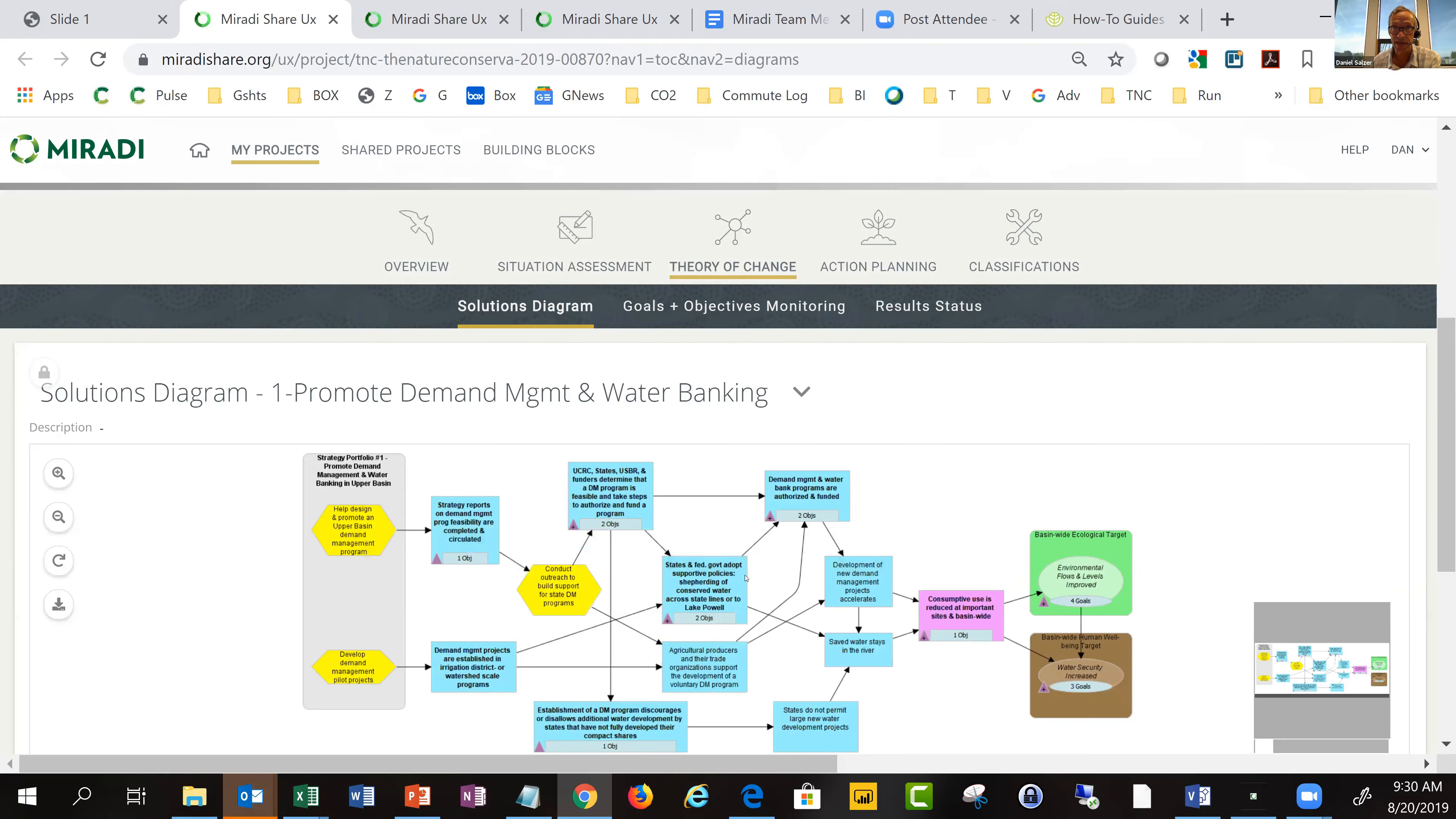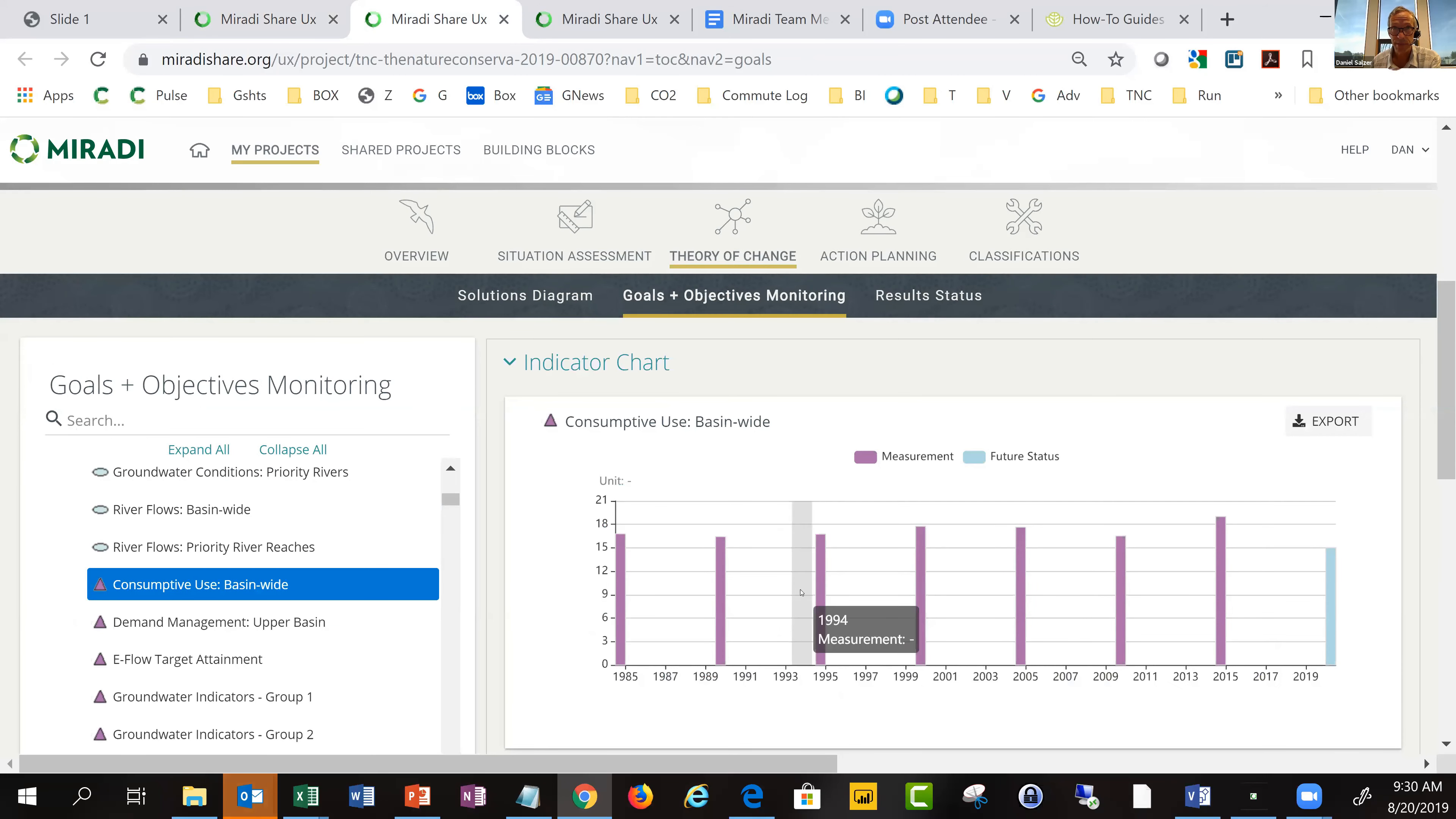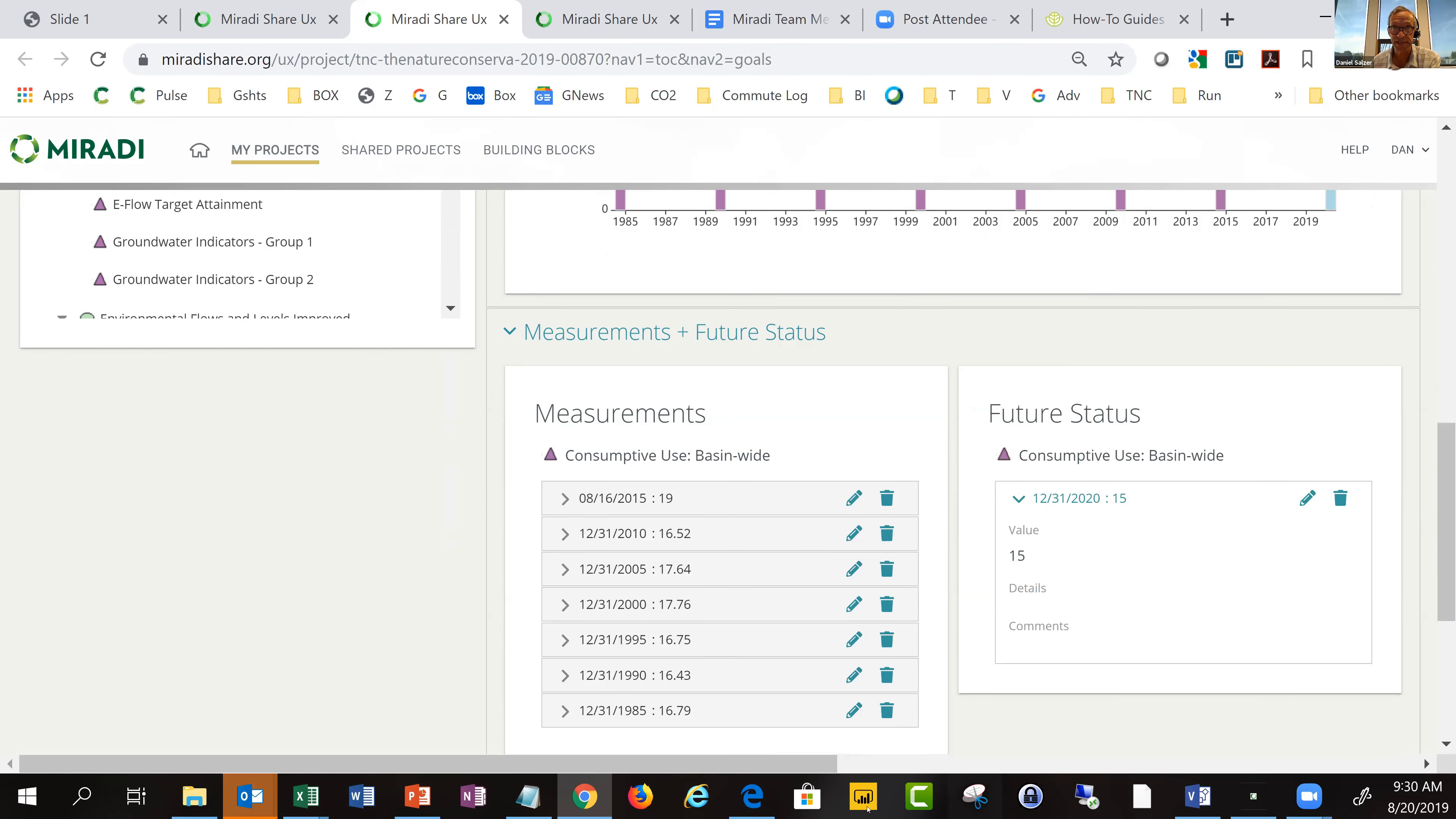I'm going to jump straight to the theory of change. You'll see the same diagram that we saw in Miradi desktop. You can zoom in and pan around to read that. I'm going to go to the goals and objectives monitoring.